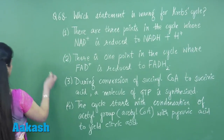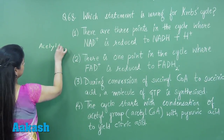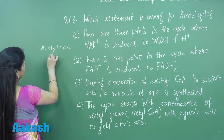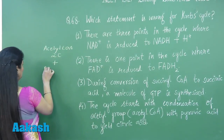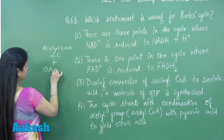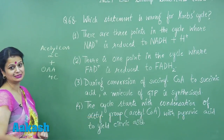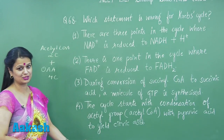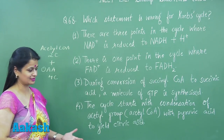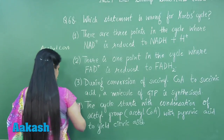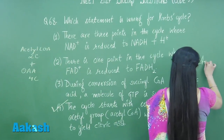It should not be pyruvic acid — it should be oxaloacetic acid. Acetyl coenzyme A is a 2-carbon compound and it joins with oxaloacetic acid, which is a 4-carbon compound. After condensation, the product formed has 6 carbons — that is citric acid. So the wrong option is option number 4, and the answer is 4.